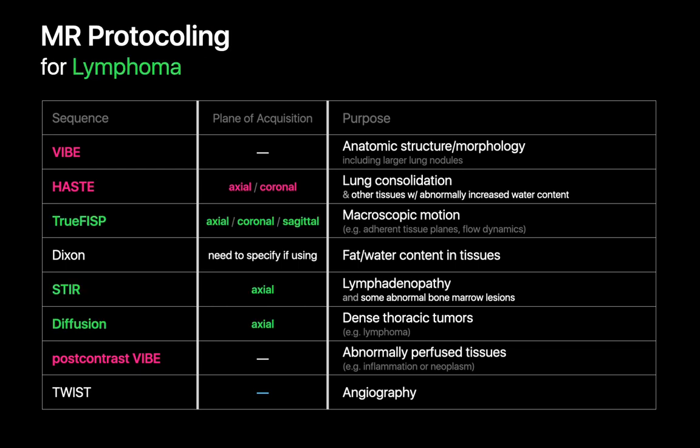If the indication of the chest MRI is lymphoma, we'll tack on additional sequences to our workhorse set. Since STIR and diffusion images are good at picking up lymphadenopathy, dense tumors, and marrow lesions, we'll include STIR and diffusion acquisitions in the axial plane. We don't need to acquire these in other planes since they wouldn't add much diagnostic value and would only make the study longer. We'll also add True FISP acquisitions in three planes to get a look at the large vessels and any mass effect present.